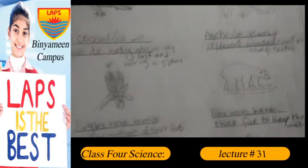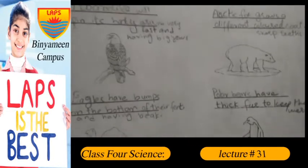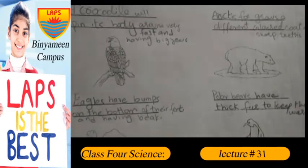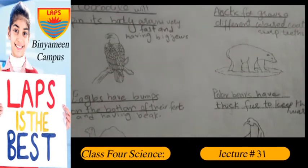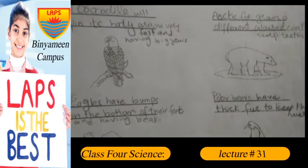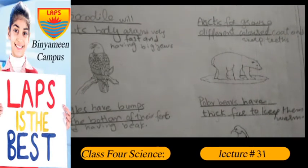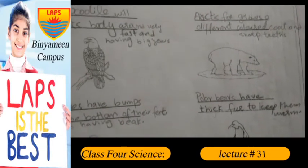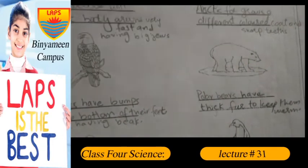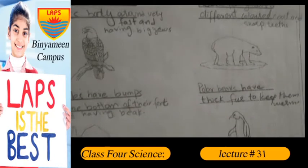Eagles have sharp teeth and bumps on the bottom of their feet, and they have a beak. Polar bears have thick fur to keep them warm.